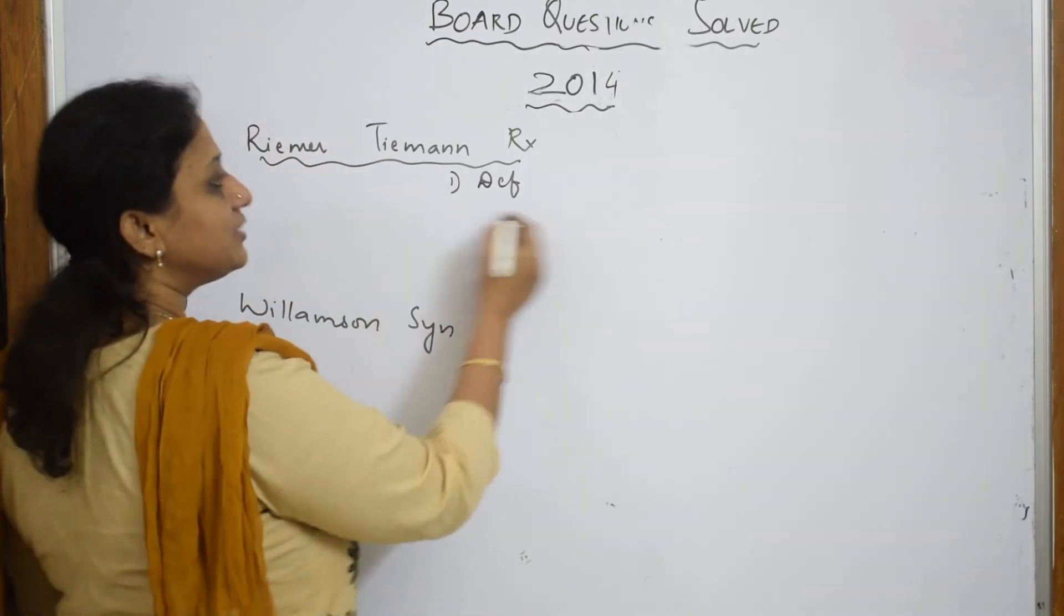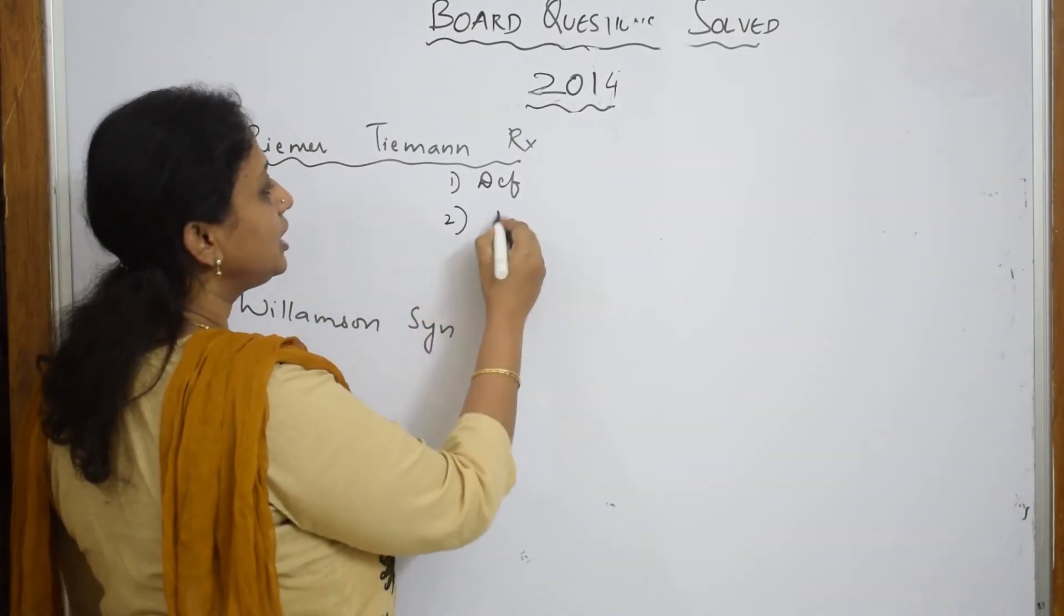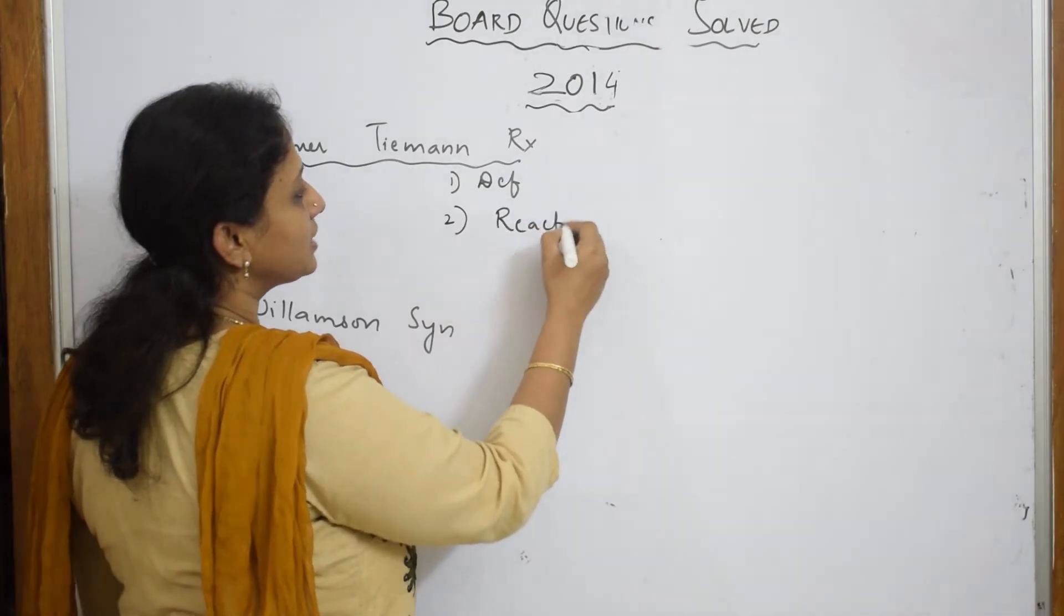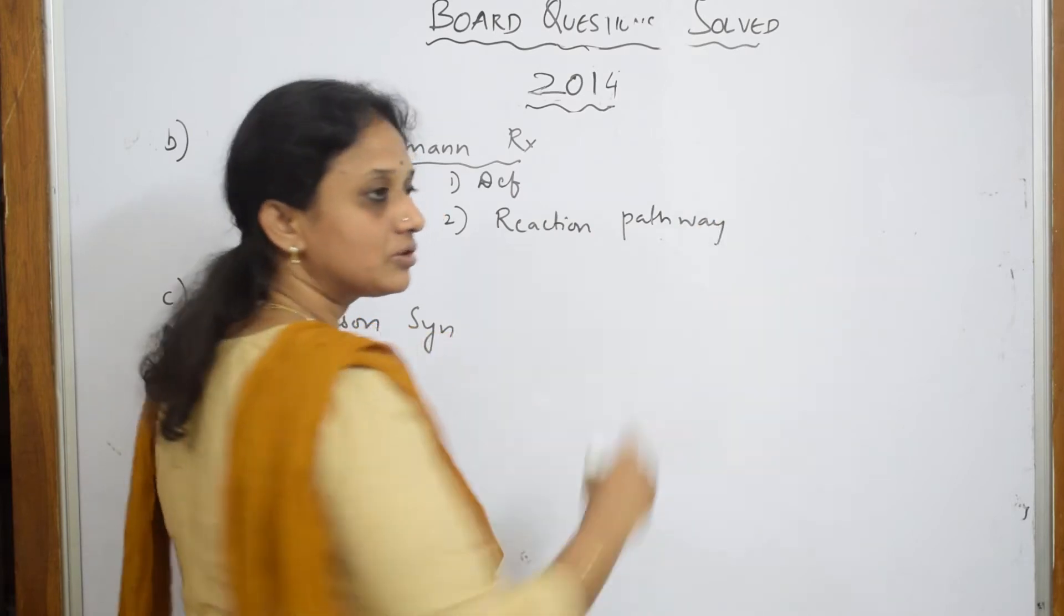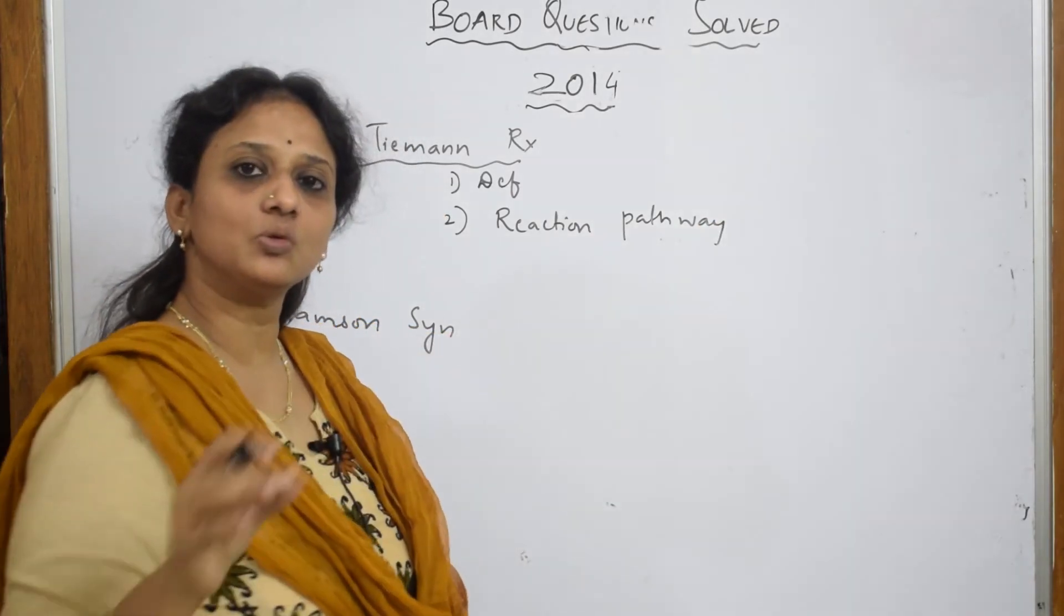Write the definition clearly. After writing the definition clearly, you are going to write the reaction pathway or complete reaction. If you are not remembering the mechanism, at least mention all the steps.